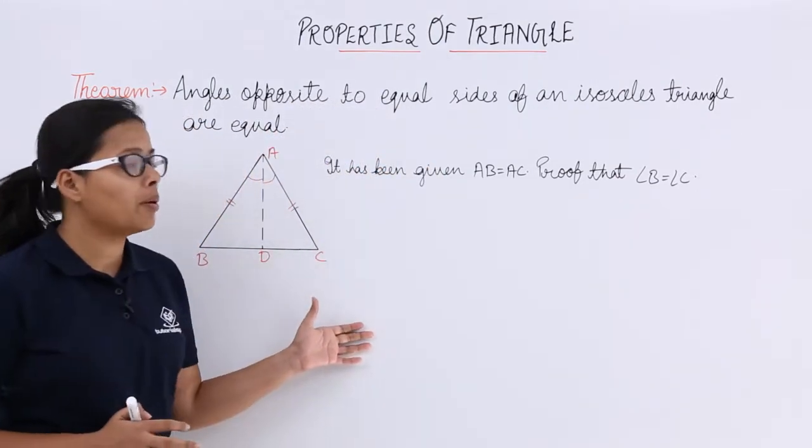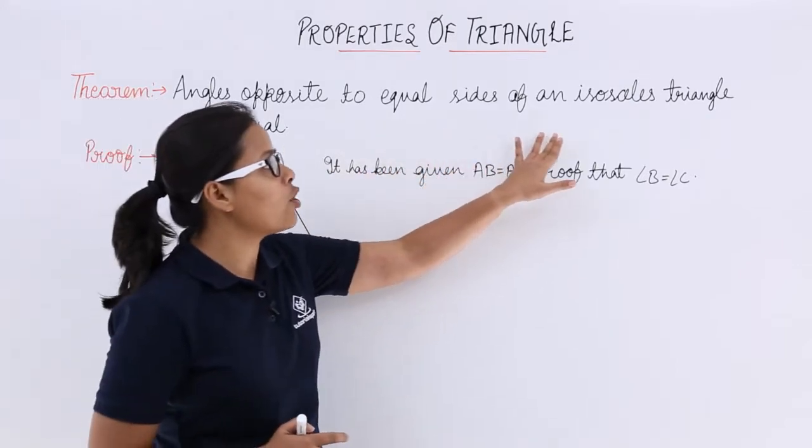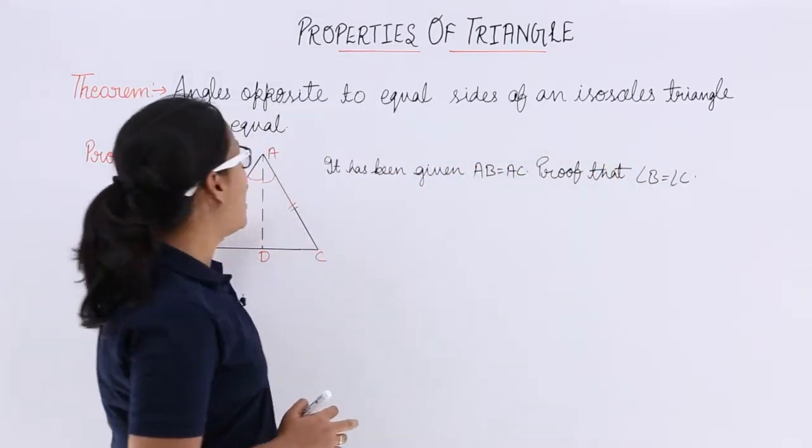You can see here I have written a theorem which says angles opposite to equal sides of an isosceles triangle are equal.